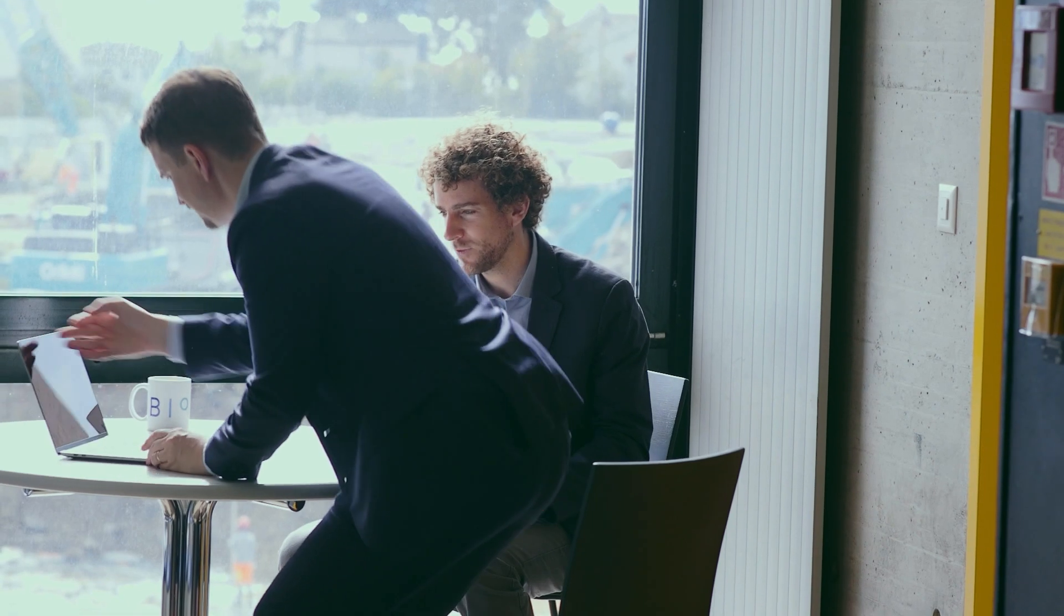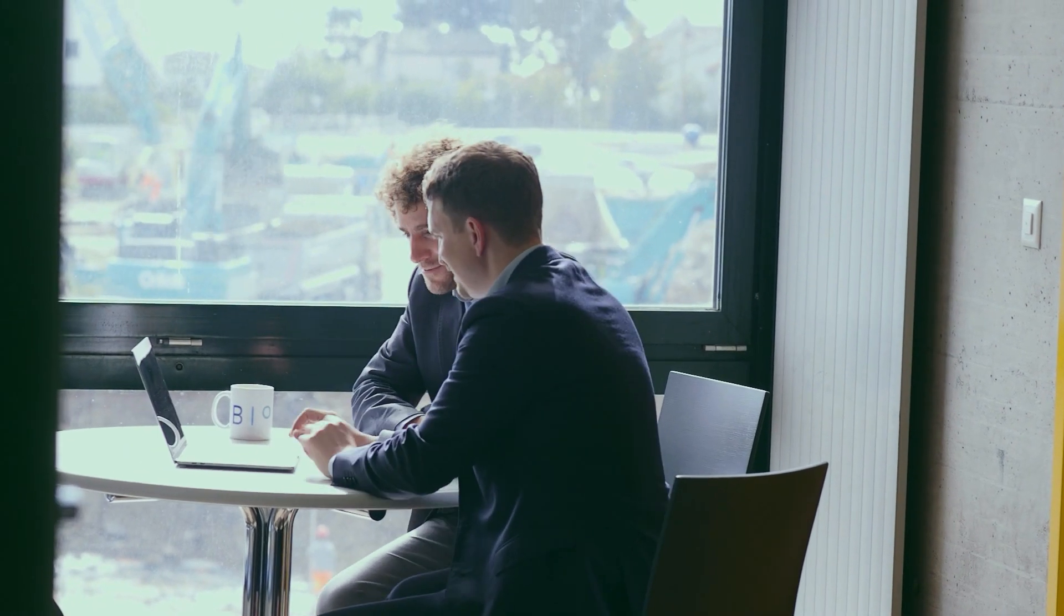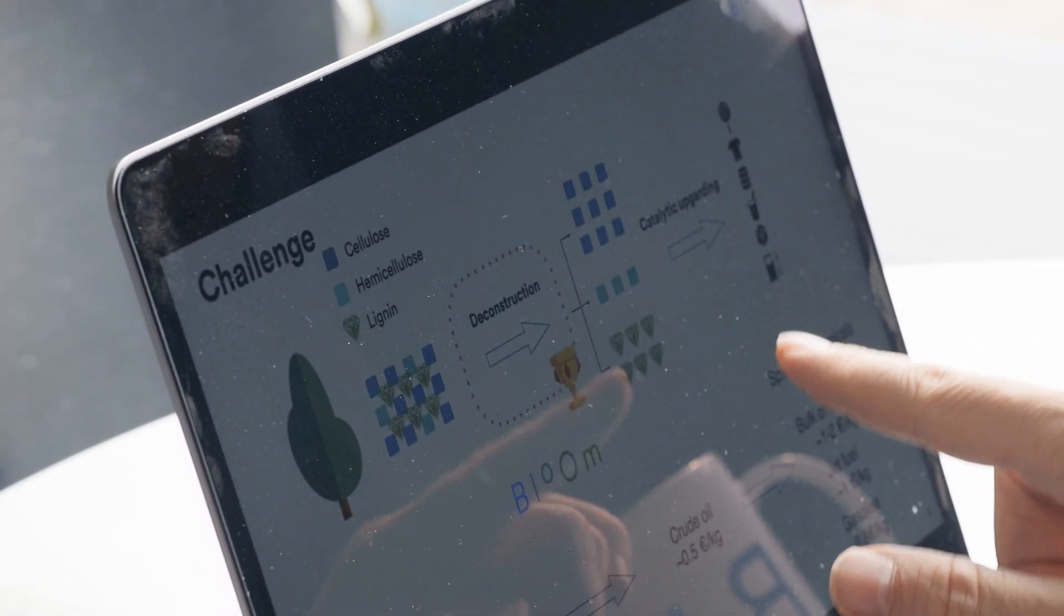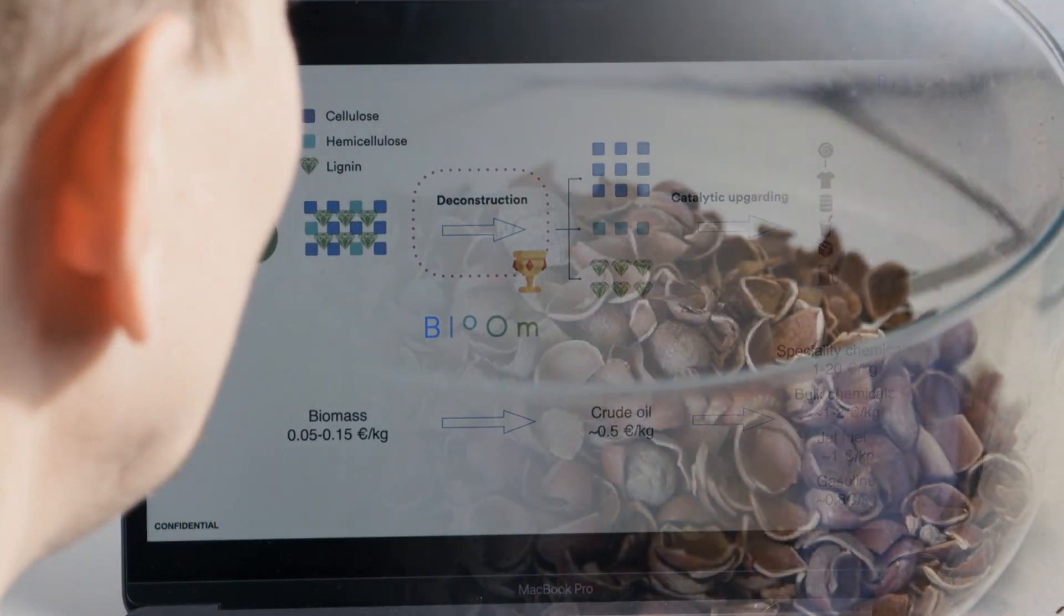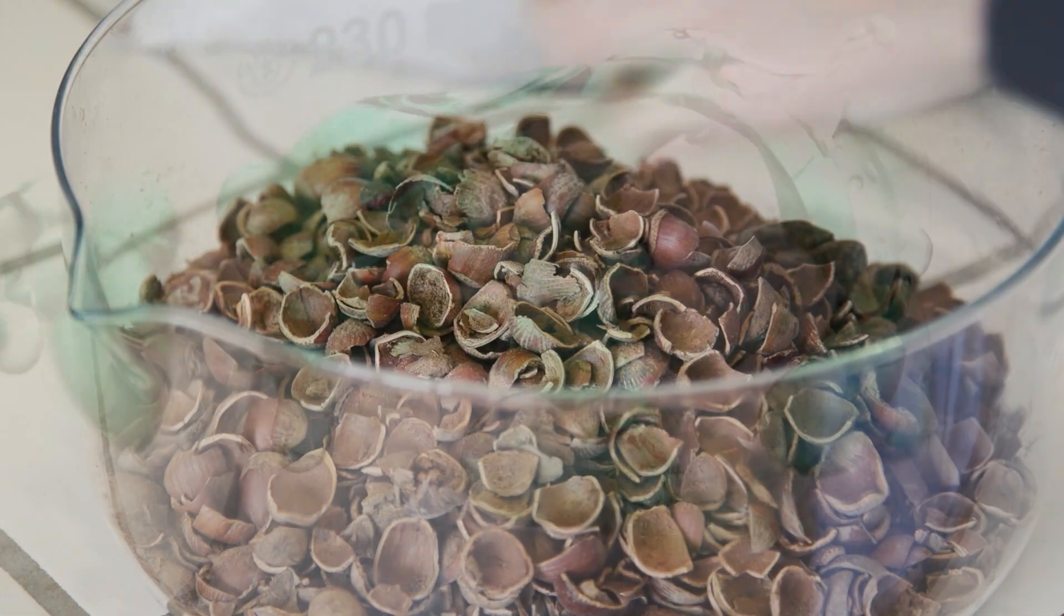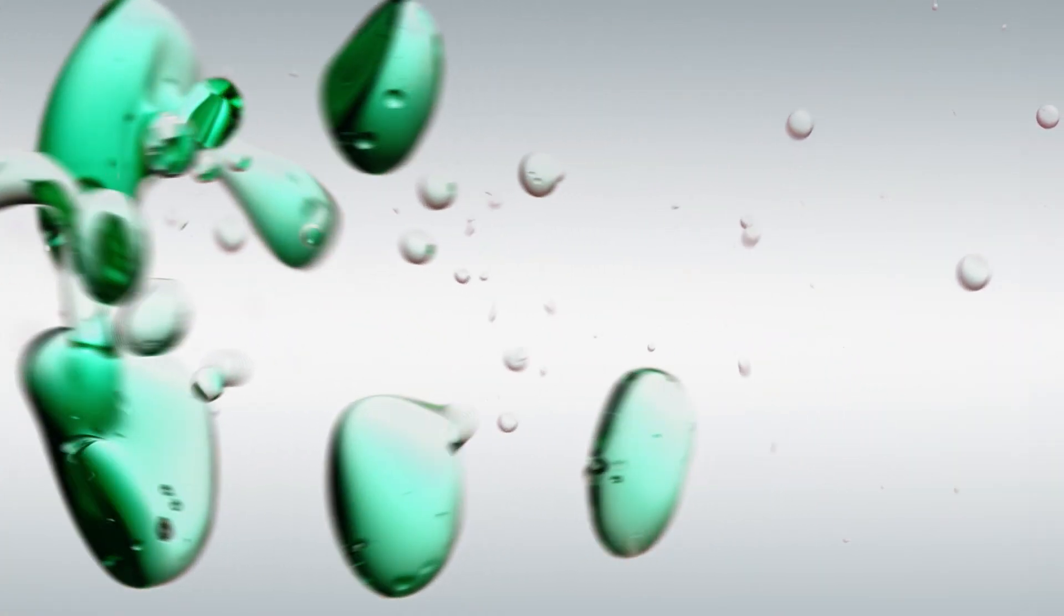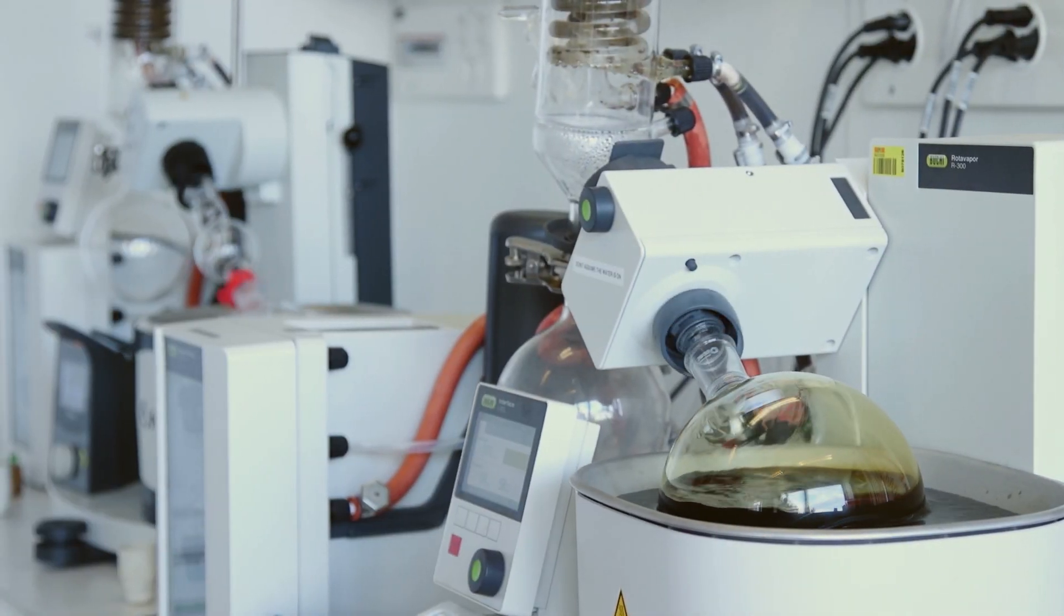Bloom Biorenewables Limited is a Swiss company providing chemical technologies to accelerate the inevitable transition to sustainable materials. The enterprise's vision is to use widely available plants to manufacture petroleum-like products that can be used by the petrochemical industry.